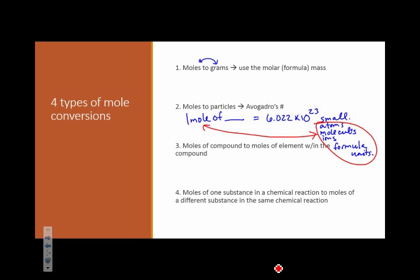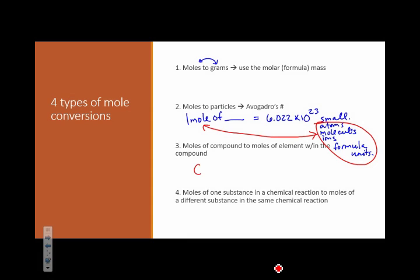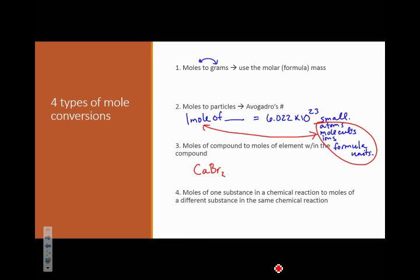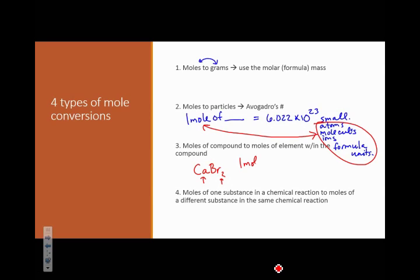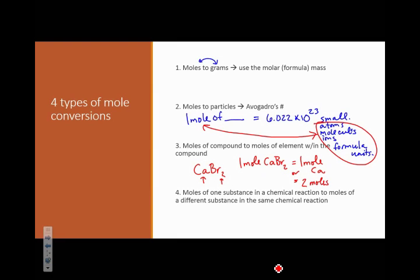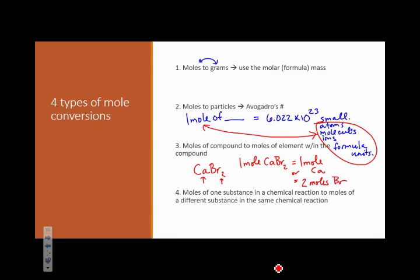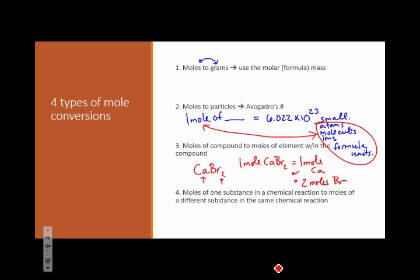Our third type of mole conversion is converting from moles of a compound to moles of element within the compound. So in this case, we might look at something like calcium bromide. And we might notice that I have one calcium and two bromides. So that's a relationship. In one mole of calcium bromide, I have one mole of calcium, or I have two moles of bromine. So basically, I'm taking my compound formula and using mole relationships to talk about how many of each part of the molecule that I have.